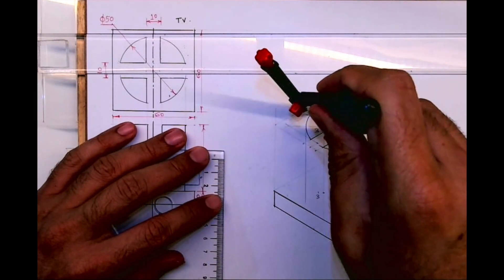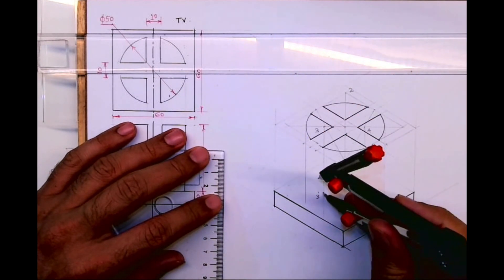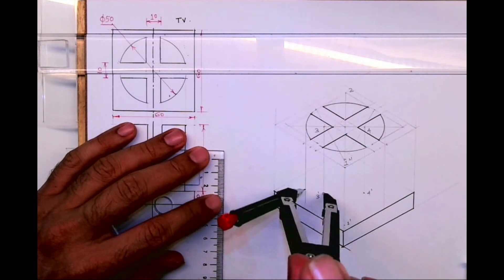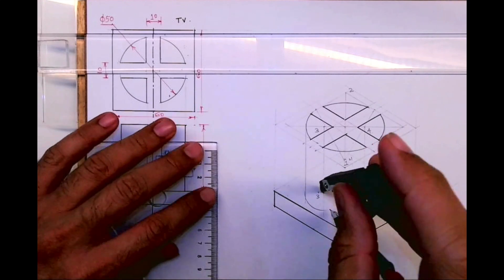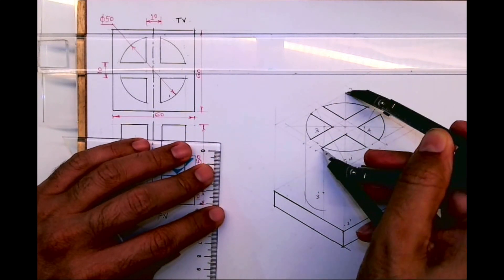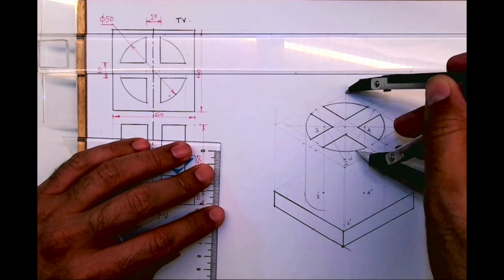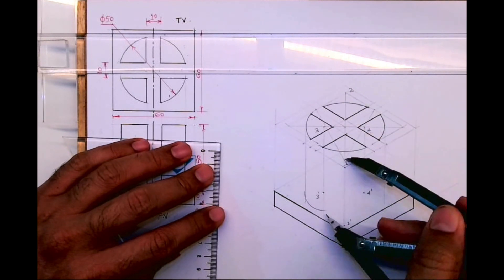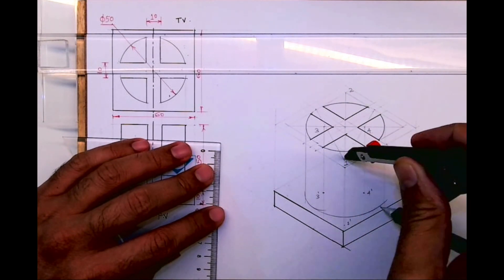Now what I will do is take the radius from three to whatever radius, and from three dash I will draw it down. Same with two and same with four. See, from two, whatever radius you have taken earlier, same radius you take, and from two dash you draw. So this is like a copy-paste method.